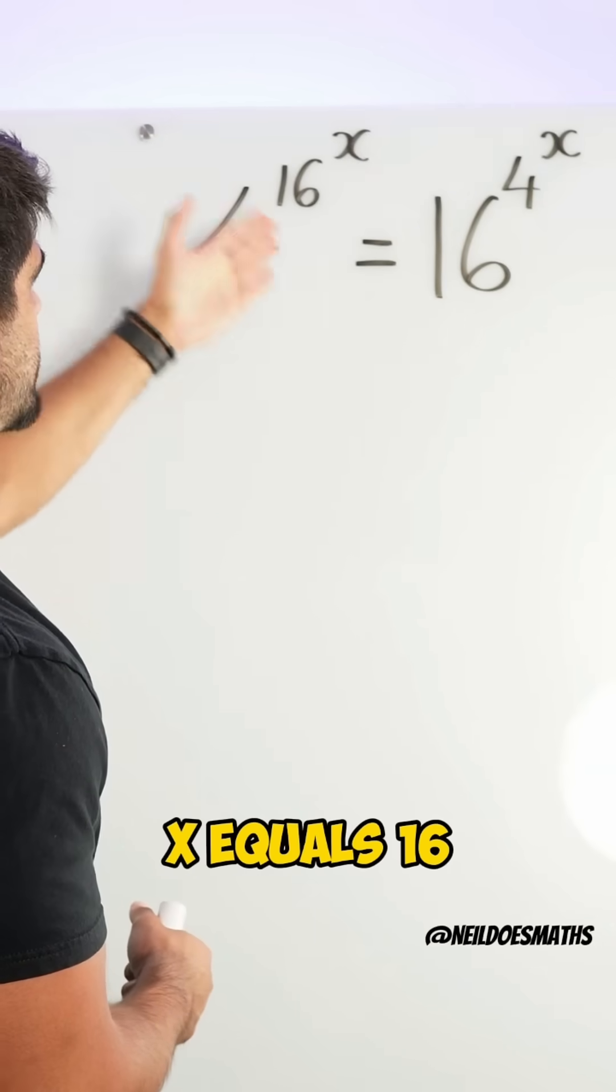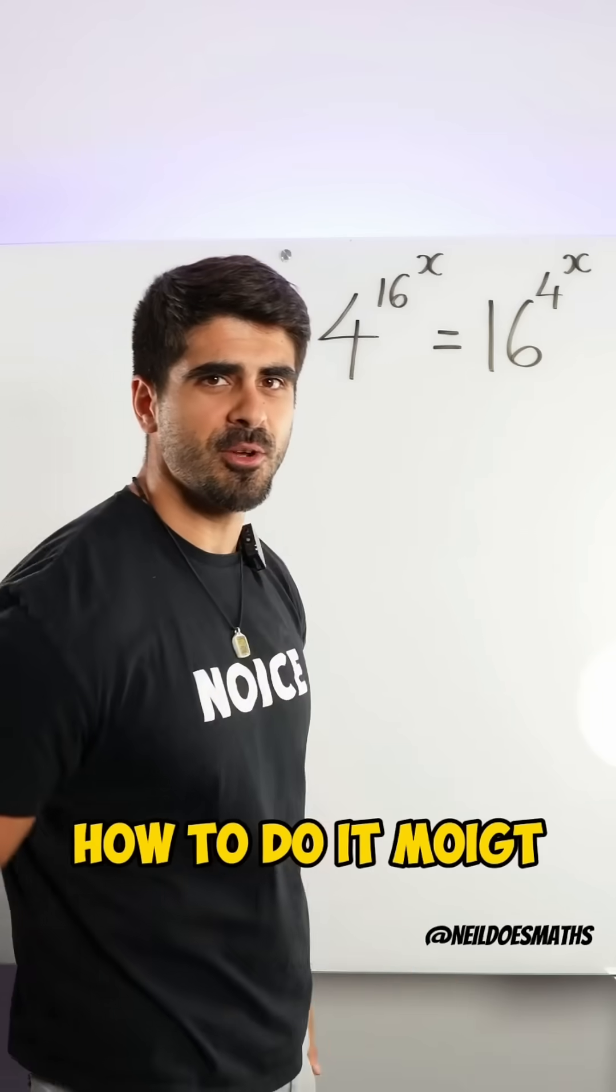4 to the power of 16 to the power of x equals 16 to the power of 4 to the power of x. Would you know how to do it, Mike?